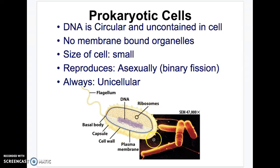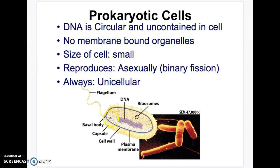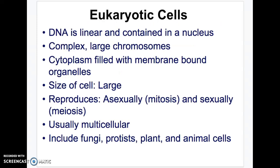The size of prokaryotic cells is super small. They reproduce asexually, which is known as binary fission — they basically just make clones of themselves. They are always unicellular; 'uni' means one. They're never more than one cell at a time and can't build into bigger structures. Could you imagine a bacteria the same size as a human? That would be crazy.